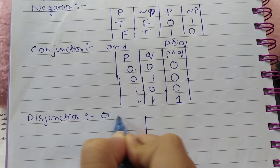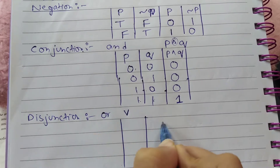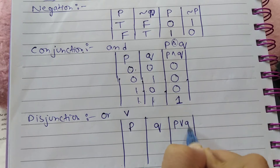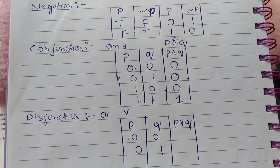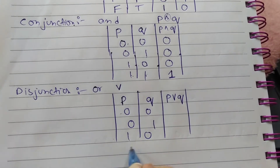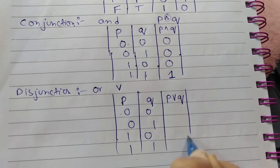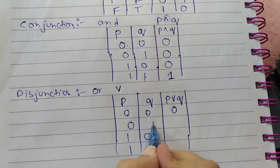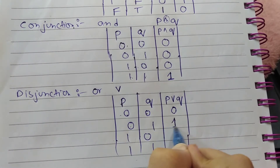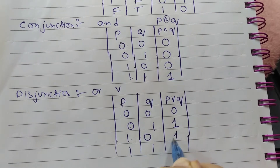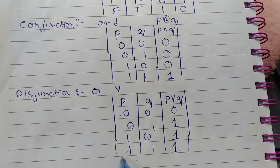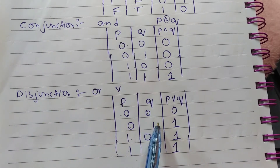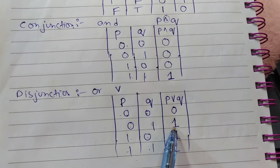Next is disjunction, represented by the OR symbol (∨) — P OR Q. In the truth table: 0 OR 0 is 0. 1 OR 0 is 1. 1 OR 0 is 1. 1 OR 1 is 1. Whenever there is a disjunction statement, if any one of them is true, the answer will be true.